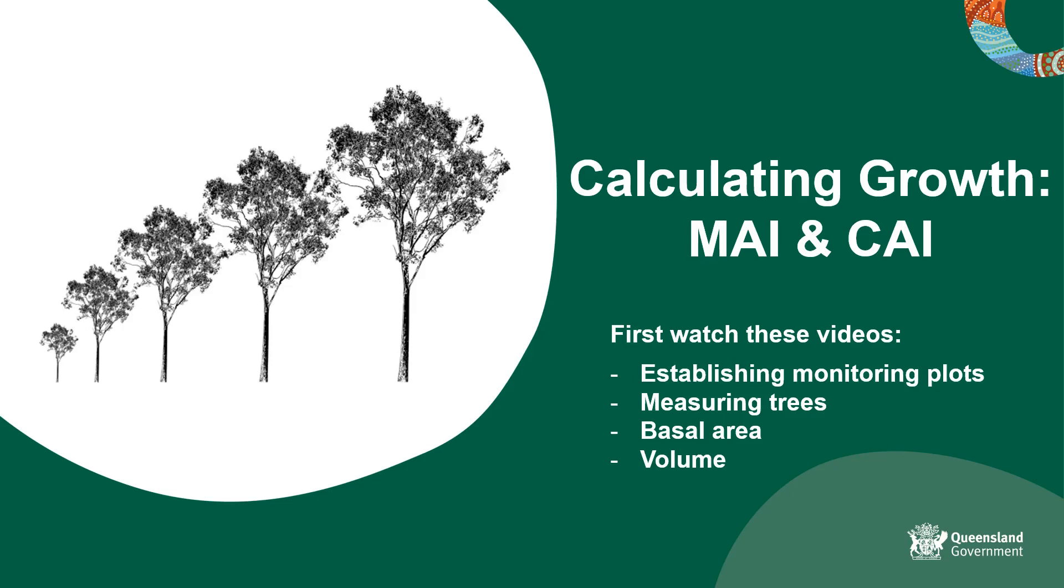Forest growth can be expressed using the measures Mean Annual Increment, MAI, and Current Annual Increment, CAI, which are simple to calculate and can assist with forest management.